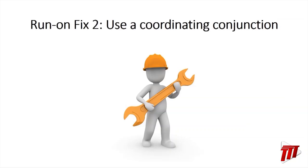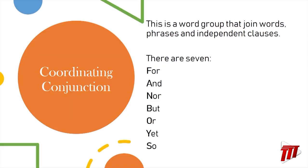And so we're going to the next fix, which is a little bit more complicated but you can handle it — fixing by using a coordinating conjunction. So what is a coordinating conjunction? It's a word that joins words, phrases, and independent clauses. It's easy to remember the coordinating conjunctions because there are only seven of them: for, and, nor, but, or, yet, so.